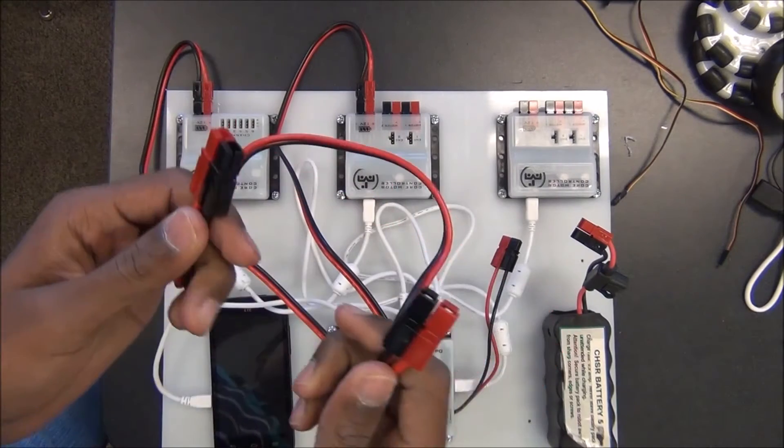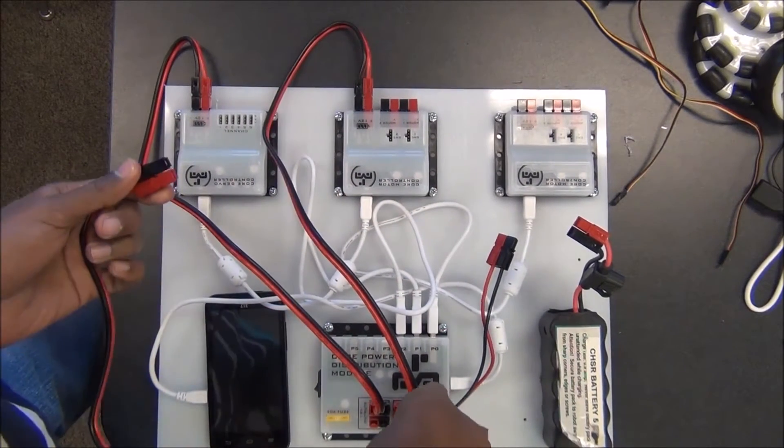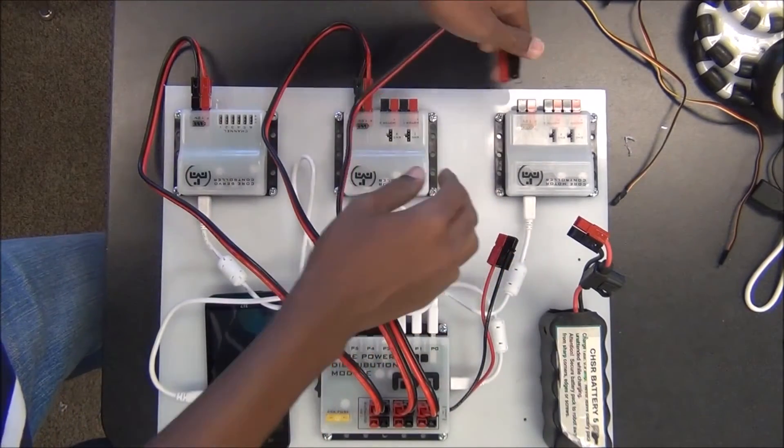And another one of these power distribution wires, one goes into the core power distribution module output, the other end to a motor controller input.